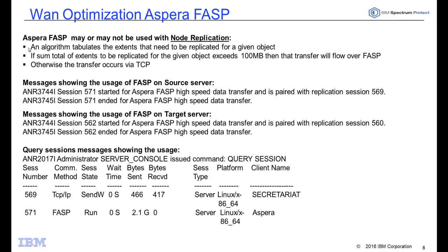To know if FASP is being utilized, messages will appear in the activity log. You will see ANR 3744i indicating that the Aspera FASP data transfer started, and ANR 3745i when it has ended. These messages appear on both the source and target servers. You can also do a query sessions, which will show for a running replicate node or protect storage pool command whether TCP/IP or FASP is being used as the communication method.